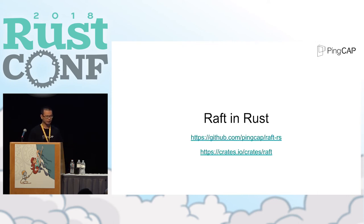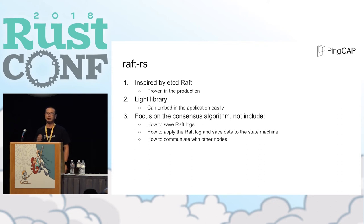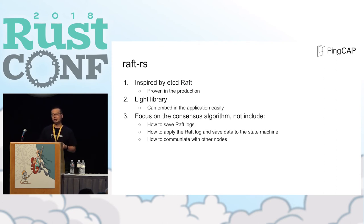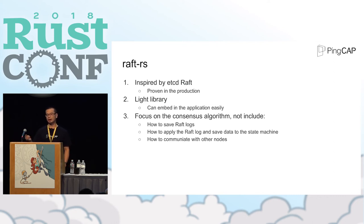I will talk about the Raft library here. You can see the repo, and you can use it directly from crates.io. Our Raft library is inspired by the etcd Raft, because etcd Raft has been used in production for a long time, and many popular projects like Kubernetes and CockroachDB have already used it. The Raft library is a tiny and very lightweight library. You can embed it into your application easily to provide a consensus layer. The Raft library is only focused on the consensus algorithm, so you need to handle how to save the Raft log, how to apply it to the state machine, and how to communicate with other Raft nodes yourself.